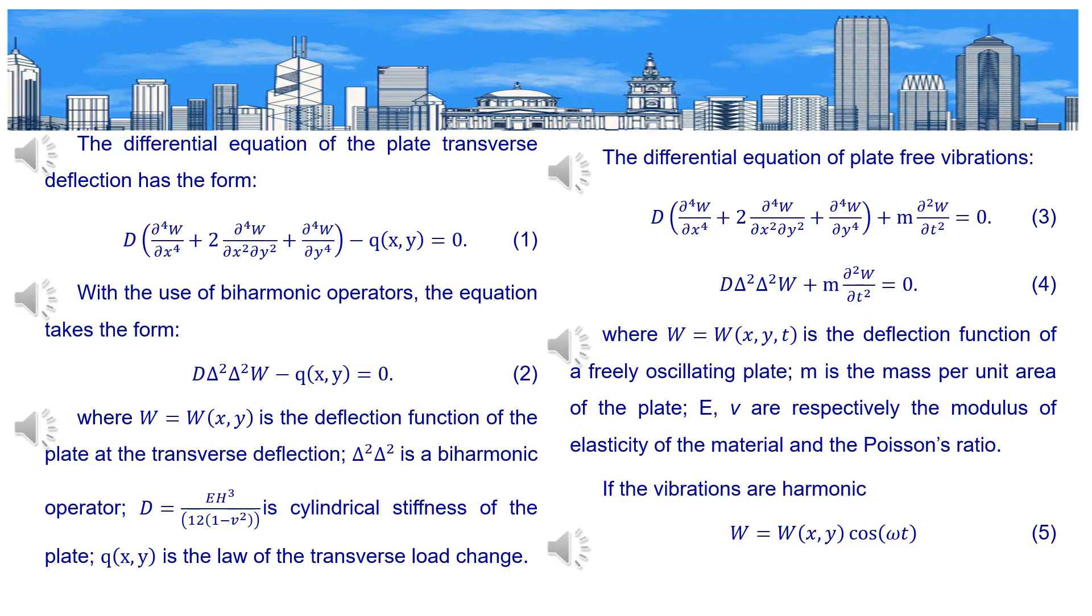Where W is the deflection function of the plate at the transverse deflection, Δ²Δ² is a biharmonic operator, D is cylindrical stiffness of the plate, Q is the law of the transverse load change. The differential equation of plate free vibrations is shown in Formulas 3 and 4, where W is the deflection function of a freely oscillating plate, M is the mass per unit area of the plate, and E and ν are respectively the modulus of elasticity of the material and the Poisson's ratio.